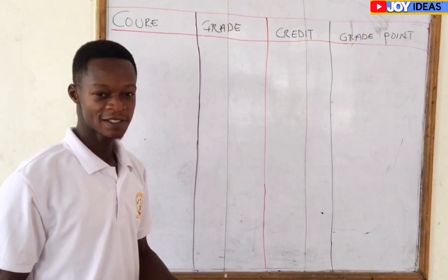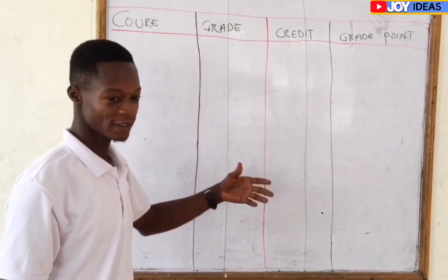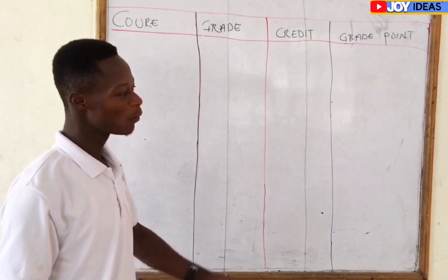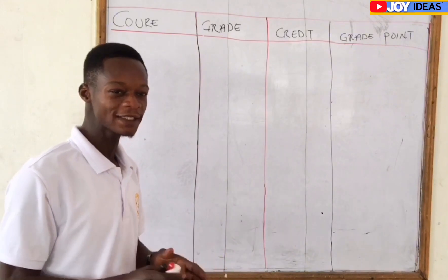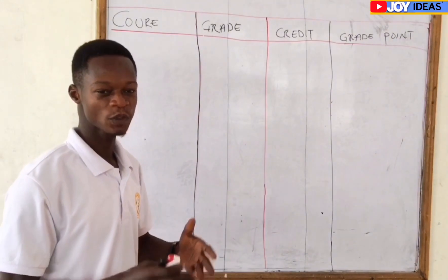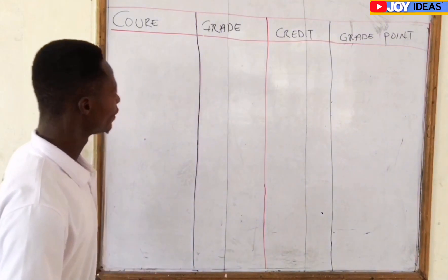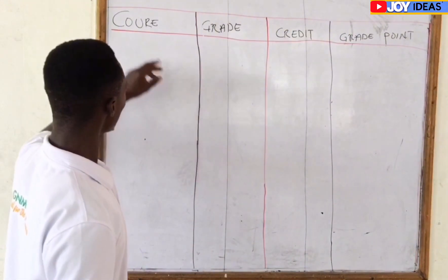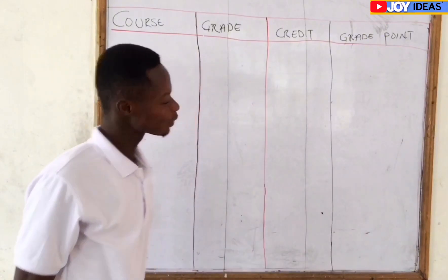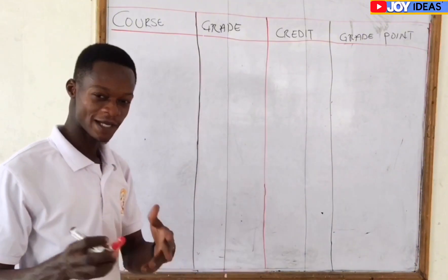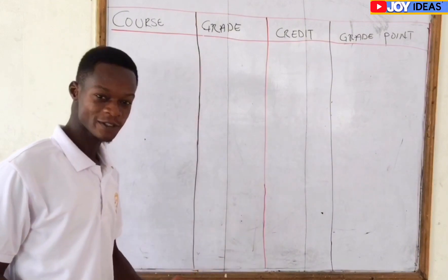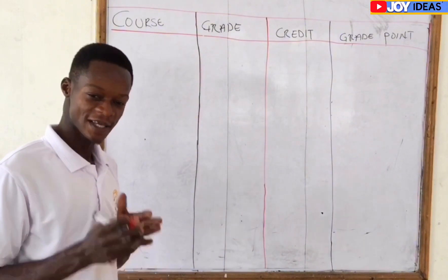I'm going to use a resource that has the list of subjects, grade points, credit hours, and use it to do the calculation to tally your results. At any point in time that you want to calculate your GPA, you'll be able to do so successfully. We have the course, the grade, the credits, and the grade point — these are what we will use to calculate our GPA.